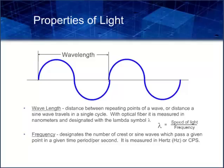Wavelength is the distance between repeating points of a wave, or the distance a sine wave travels in a single cycle. With optical fiber, it is measured in nanometers and designated with the lambda symbol. Frequency designates the number of crests or sine waves which pass a given point in a given time period, generally per second. It is measured in hertz, or CPS, cycles per second.